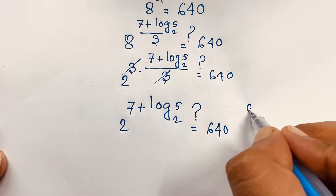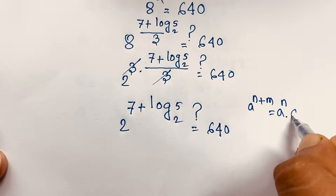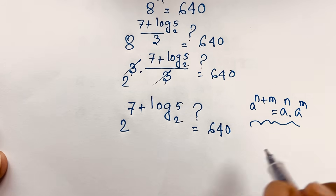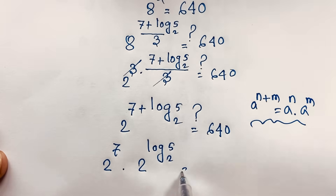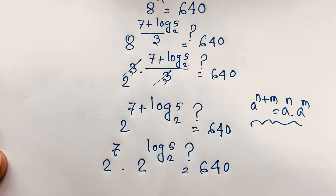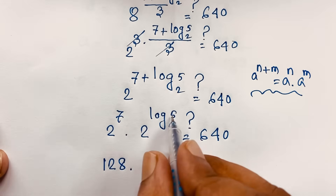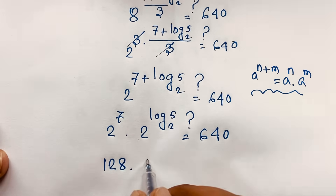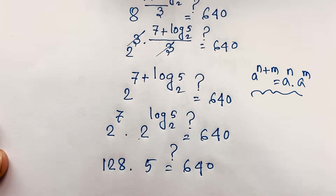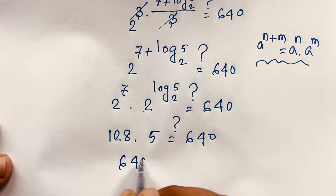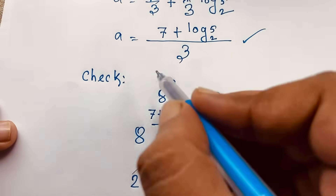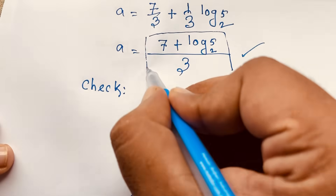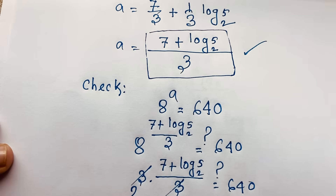Applying the exponent rule a^(n+m) = a^n · a^m, this becomes 2⁷ × 2^(log₂5) = 128 × 5 = 640. Left-hand side equals right-hand side, confirming our answer: a = 7/3 + (1/3)·log₂5. Thank you all! If you enjoyed this math problem, please subscribe to the channel for more interesting videos. Goodbye, take care!